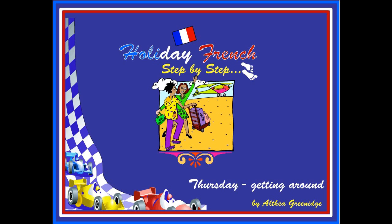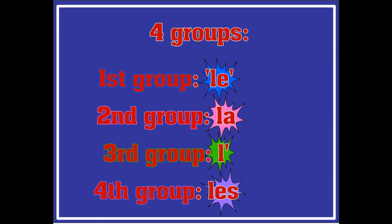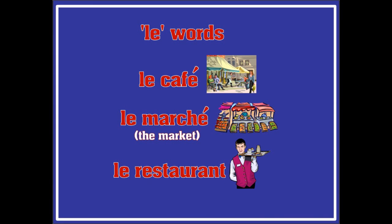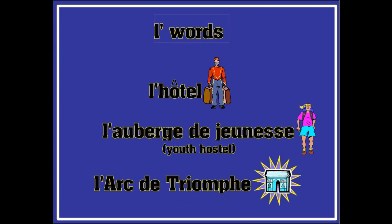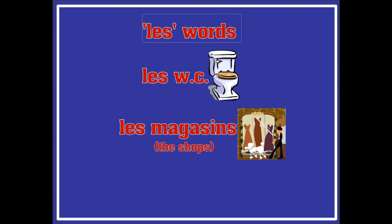Step 1 will be to generate a list of places. What you will find is that these words are divided into four groups or categories. Some may have LE in front of them, others LA, others L', and others LES. Examples of the four groups are: Le café, Le marché, Le restaurant, La plage, La tour Eiffel, La gare, L'hôtel, L'auberge de jeunesse, L'arc de triomphe, Les WC, Les magasins.